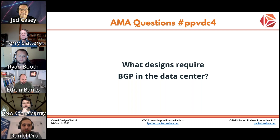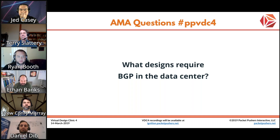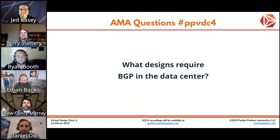Yeah, specifically if you're needing to move L2 services across your infrastructure in the data center, then you're going to be looking into EVPN-type topologies, which obviously means you're going to be using BGP. That's probably the most popular one right now — that's going to be the biggest take, especially if you don't want to have a layer two fabric across your infrastructure, which you're pretty much not wanting to do anymore.